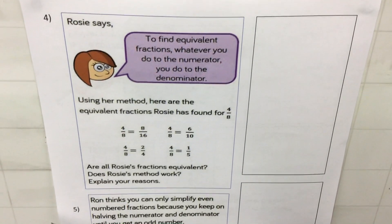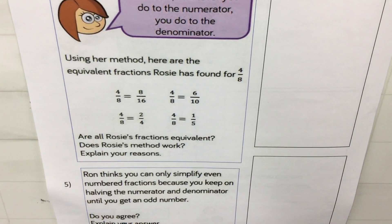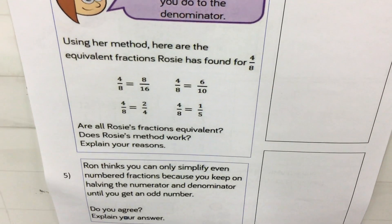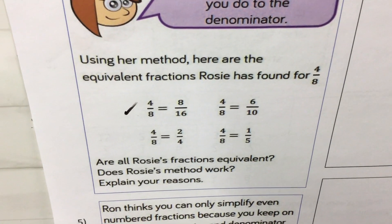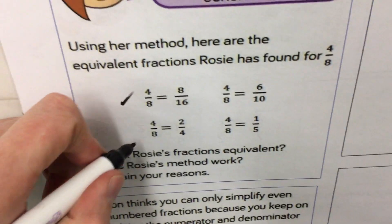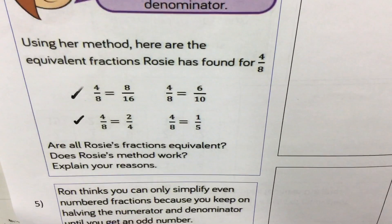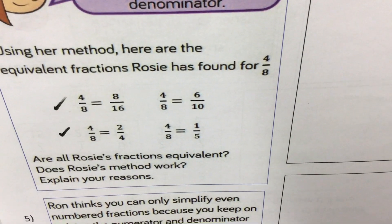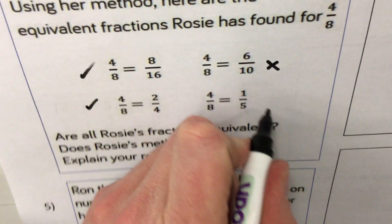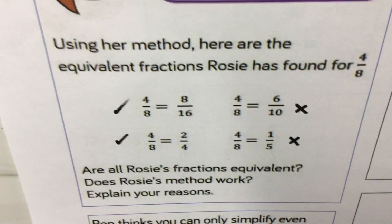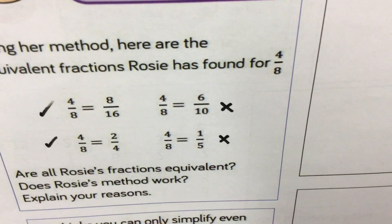Rosie says: to find equivalent fractions, whatever you do to the numerator you do to the denominator — that's exactly right. But are all of her examples equivalent? Four eighths does make eight sixteenths — multiply numerator and denominator by two. Four eighths can be simplified to two quarters. Four eighths is the same as five tenths because both are equivalent to one half. However, four eighths is certainly not equivalent to one fifth — her method works, but she calculated two of them incorrectly.